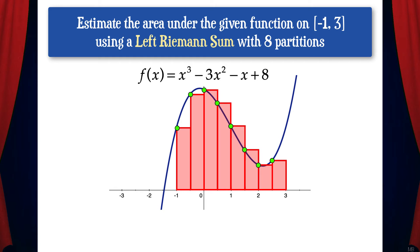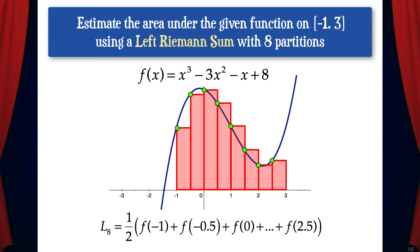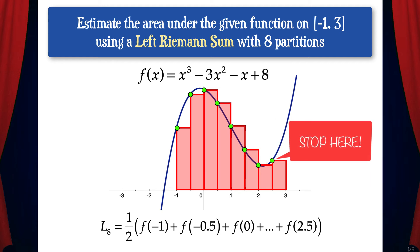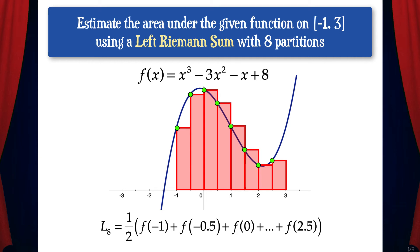Now we can write the equation for the left Riemann sum. One way to notate this is L sub 8, where L means left and 8 means we're using 8 partitions. This gives us 1 half times the quantity of f of negative 1 plus f of negative 0.5 plus f of 0, and all the way up to f of 2.5. Note that we start at the left endpoint and keep adding delta x to get the successive function values. We stop at f of 2.5 because that's the left side of the last rectangle. If we need the final numerical value, we can use a calculator — for now, the key is knowing how to correctly set up the equation.